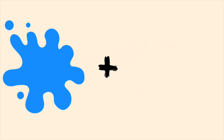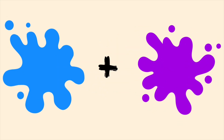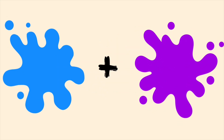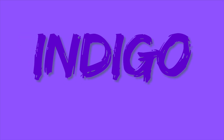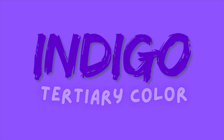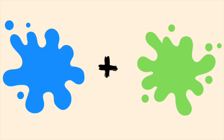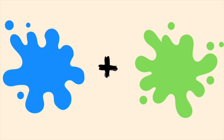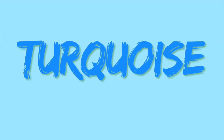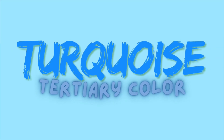Blue and purple make indigo. Turquoise. Turquoise is a tertiary color, or teal.